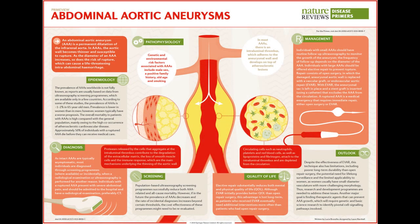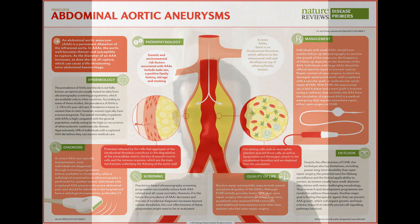In larger vessels like the abdominal aorta, atherosclerosis creates aneurysmal dilations. Aneurysmal dilation means the vessel balloons outward — like a pipe that balloons from the outside. This is how aneurysmal dilation happens.